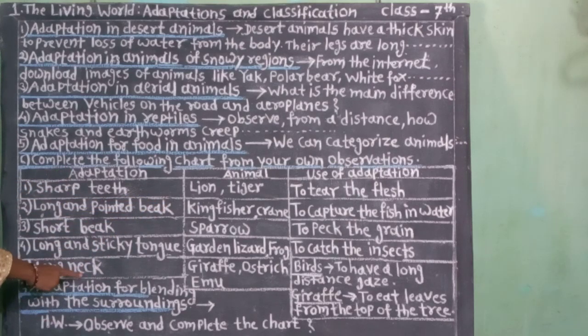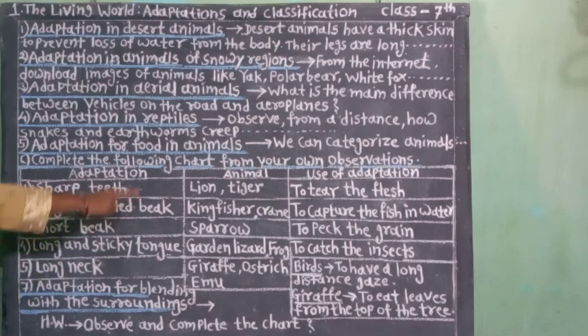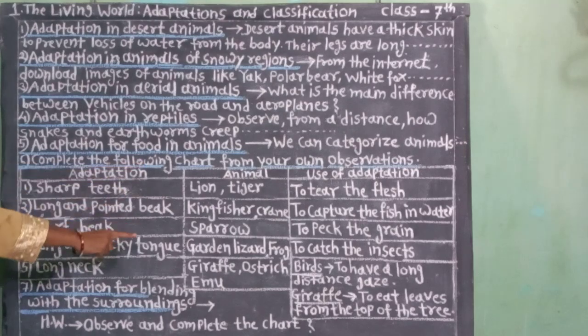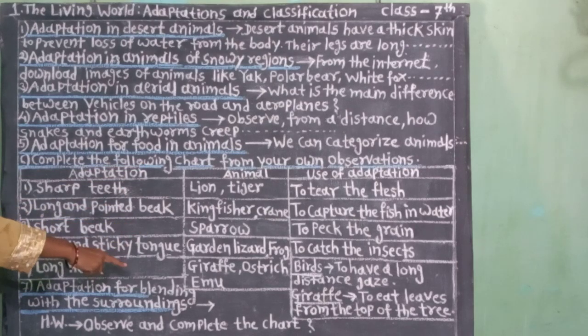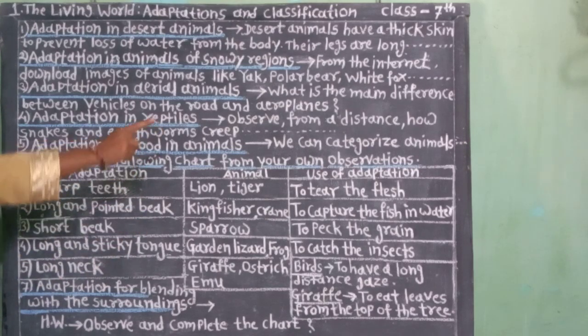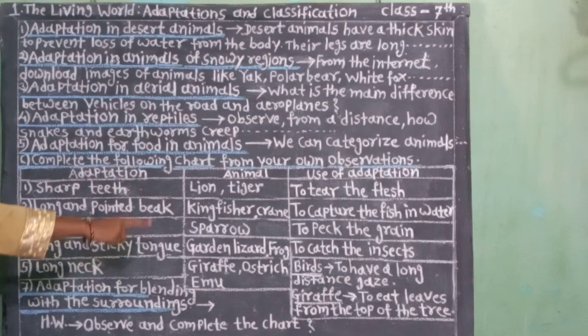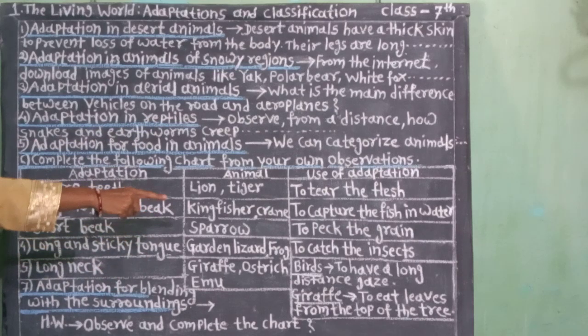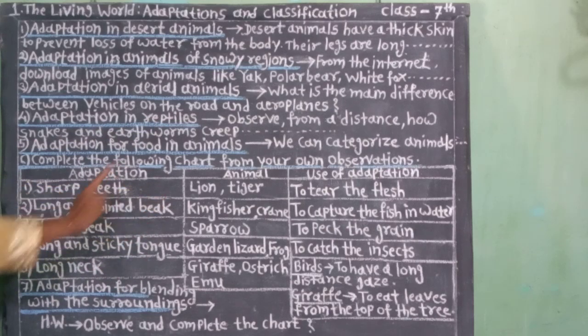Number 5. Adaptation: long neck. Animal: giraffe, ostrich, emu. Use of adaptation — for birds: to have a long distance gaze.